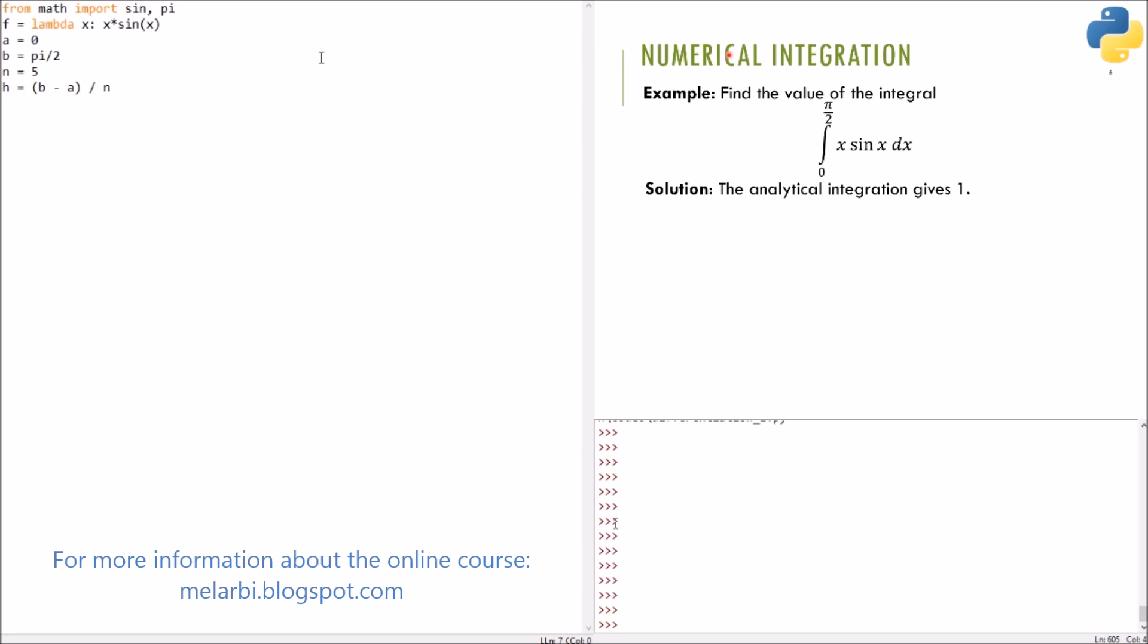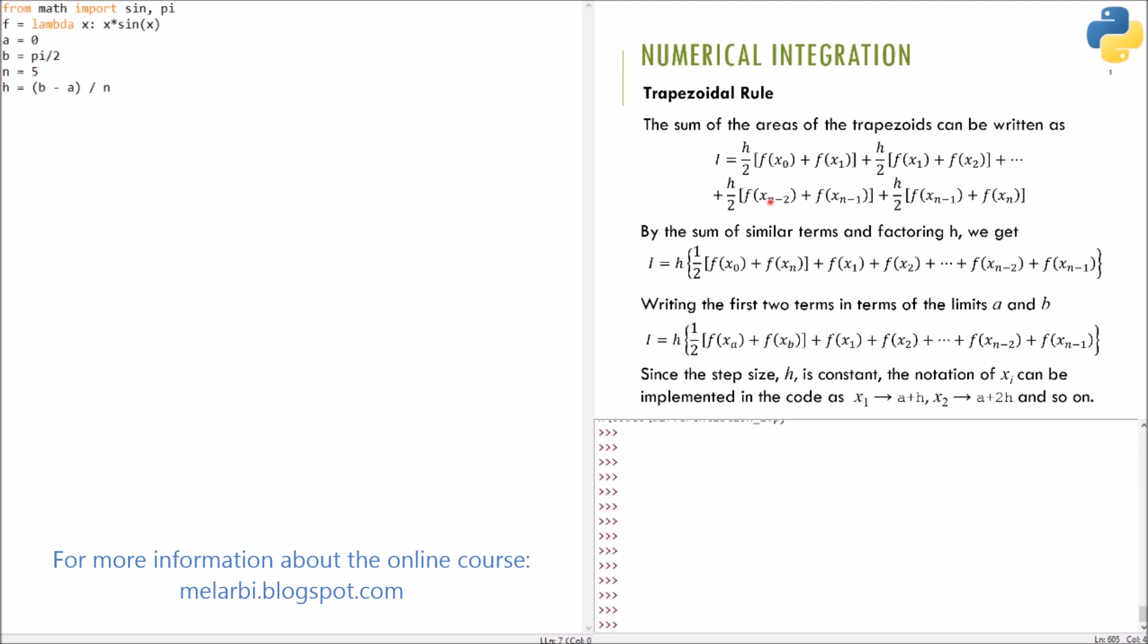Now, let's go to the formula here, and see how to write this in the code. First of all, we will notice that we have a fixed term here. It is f of x of a plus f of x b, all multiplied by half. So, let's start the summation loop, because we have summation here of the terms from x1 up to f of xn minus 1.